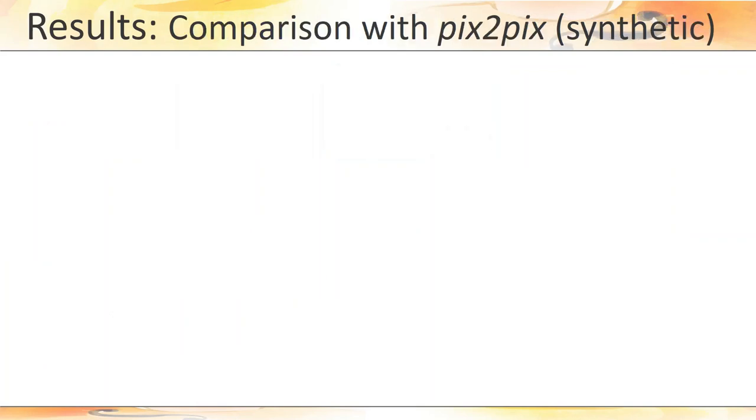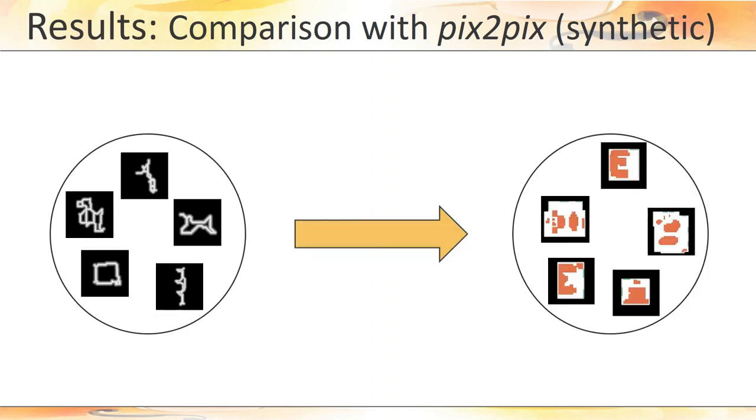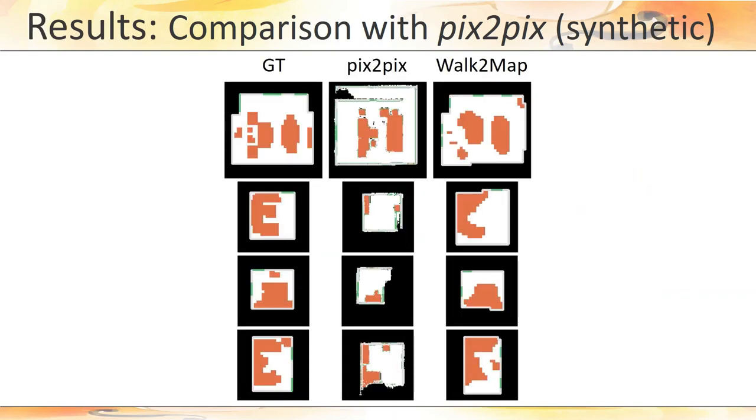The advantages of our structured pipeline become evident in the comparison against the baseline based on Pix2Pix, the well-known approach for general image-to-image translation. Here, we are basically solving the problem of converting the image of a walk trajectory into the image of the corresponding floor plan. As shown by these examples from the Matterport 3D dataset, this approach yields very noisy results with poor furniture localization, but most importantly, it happens systematically that walls do not form a closed loop or that doors appear outside of the wall boundary. This never occurs in walk-to-map, which always yields structurally correct floor plans.